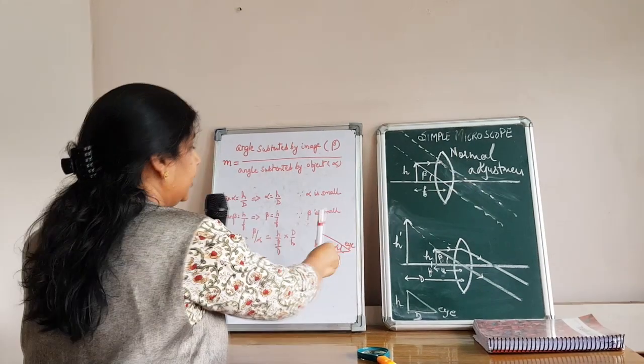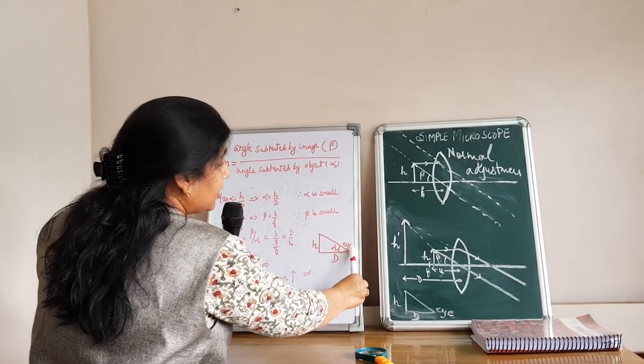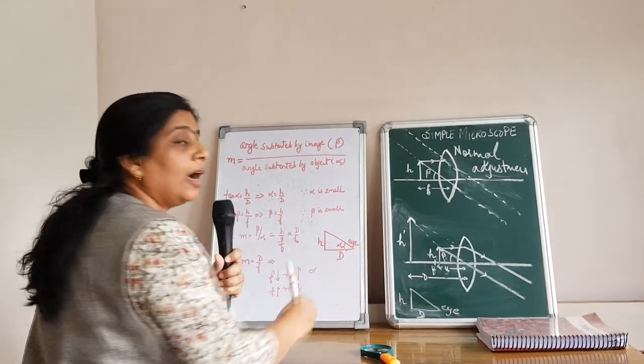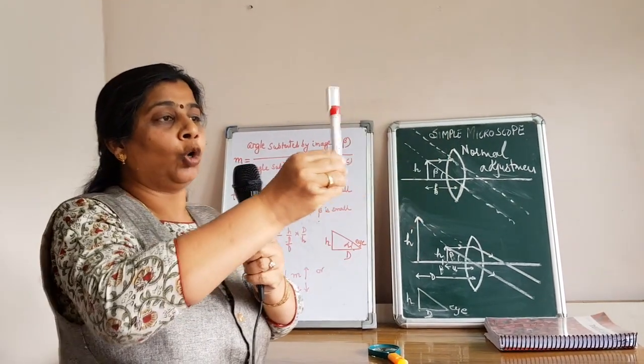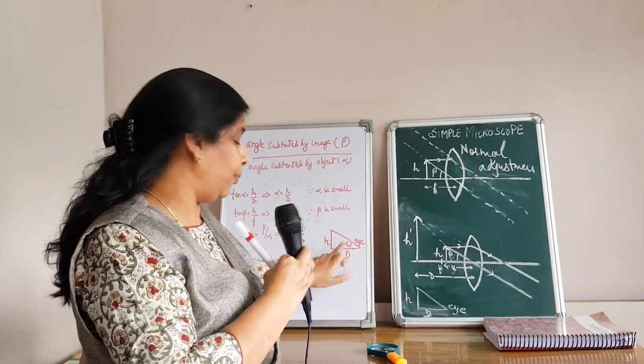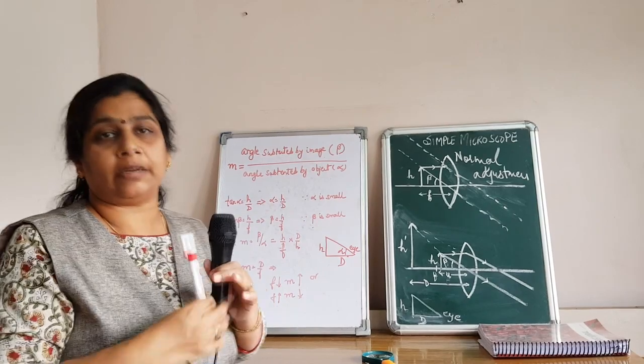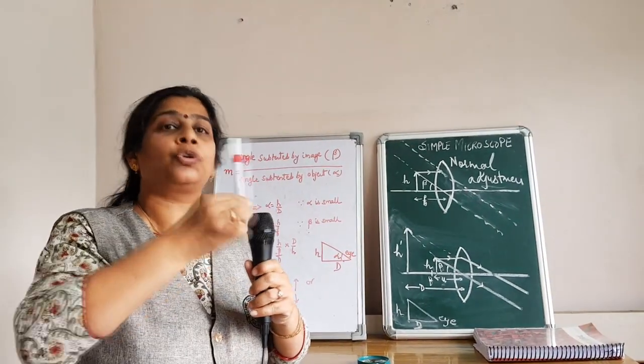If I just imagine that this is my object and this is my eye, this is the least distance of distinct vision. The angle it makes is alpha. If I bring it closer, the angle alpha will be broad. If I take it far away, the angle alpha will keep on decreasing. But I cannot bring this closer to my eye.